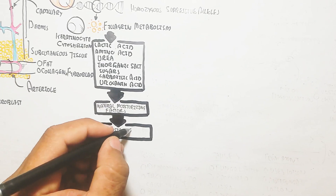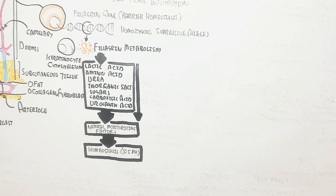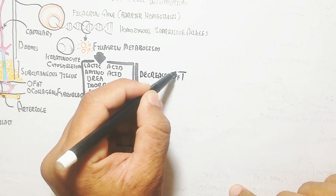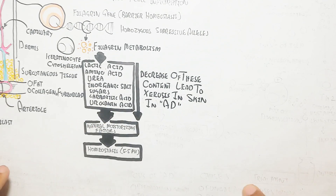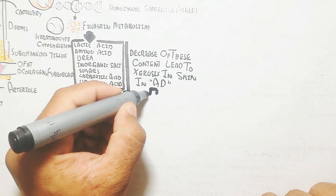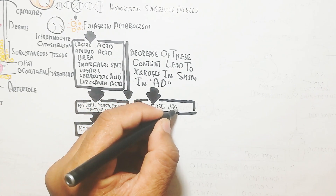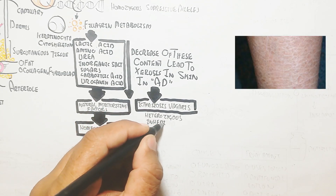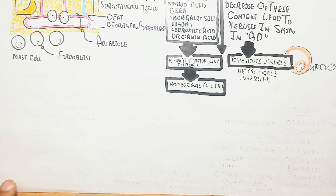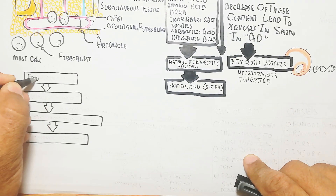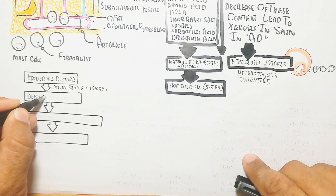These metabolites form the natural moisturizing factor, which keeps the skin moist and maintains homeostasis at pH 5.5. When filaggrin protein mutation causes deficiency of this content, it leads to xerosis — dryness of the skin — in atopic dermatitis. This destruction also leads to ichthyosis vulgaris, a heterozygous inherited condition where dead skin does not separate properly from new skin.